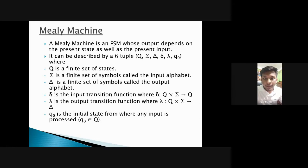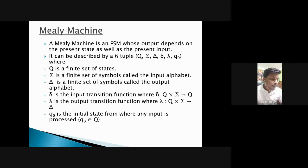A Mealy machine is a FSM whose output depends on the present state as well as the present input. It can be described by six tuples, where Q is the finite set of states, Sigma is the finite set of symbols called the input alphabet, Delta is a finite set of symbols called the output alphabet, Del is the input transition function which maps Q cross Sigma to Q, and Lambda is the output transition function which maps Q cross Sigma to Delta — meaning output depends on both present state and present input.